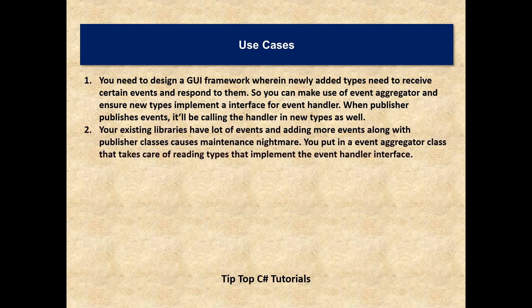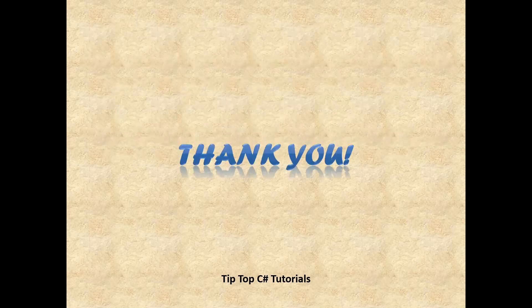Another use case is when you have libraries with many events and adding more events along with publisher and wiring mechanisms is causing a maintenance nightmare. You put in an Event Aggregator class and migrate all the wiring mechanisms to it, so it is responsible for all the event passing — publications, publishers, and subscribers. That will ease up and decouple all the publications and event-handling wiring. That's all about the Event Aggregator pattern, its benefits, and its use cases. Thank you for watching this video.